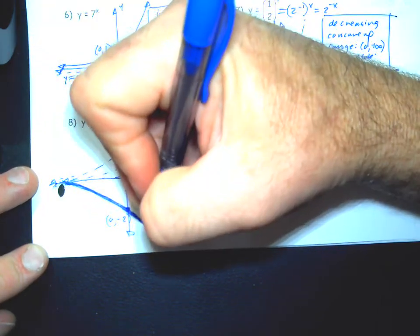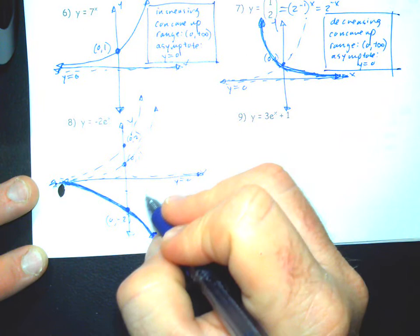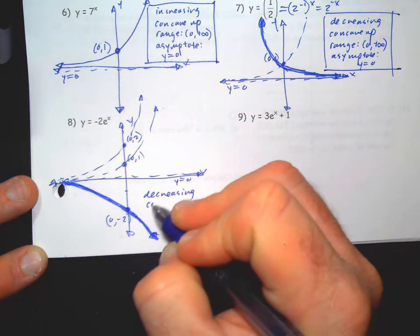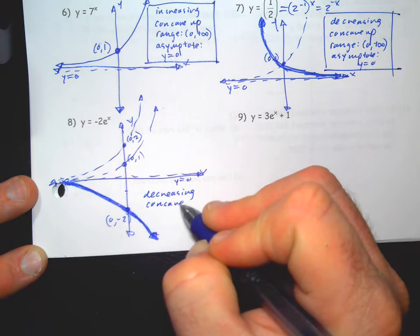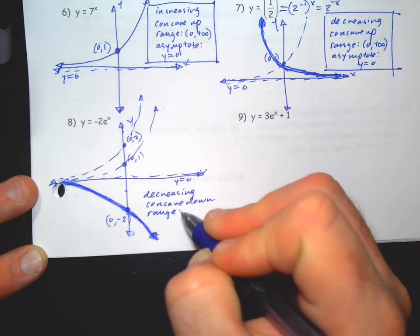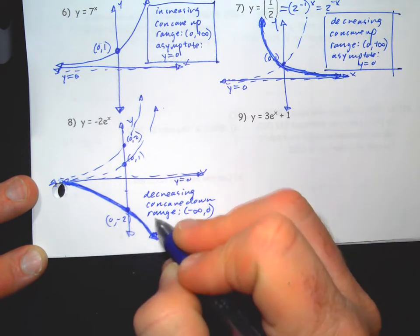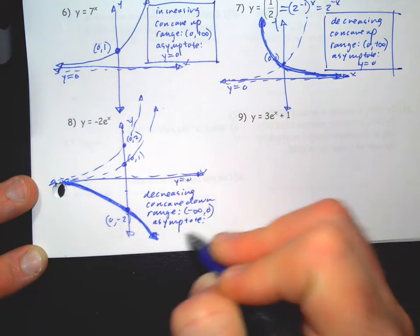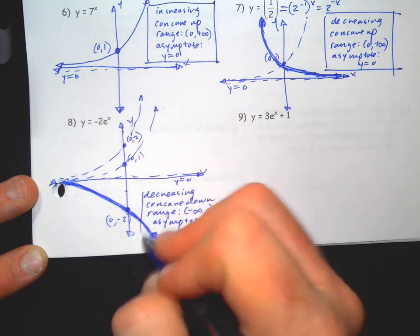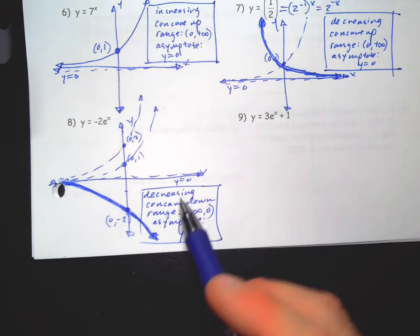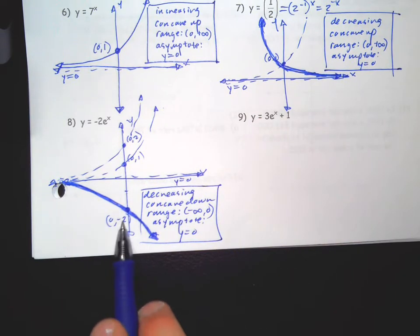Darken it in, arrows on the ends. This is decreasing, concave down. Range is negative infinity to zero, and its asymptote is y equals zero. So I do need you to label the asymptote, label that y-intercept also, and dot in the coordinates.